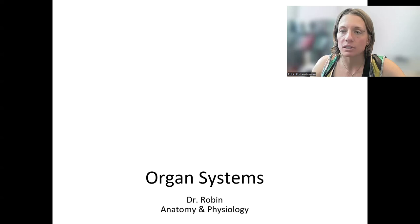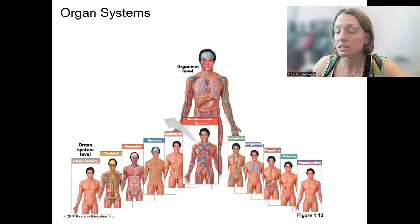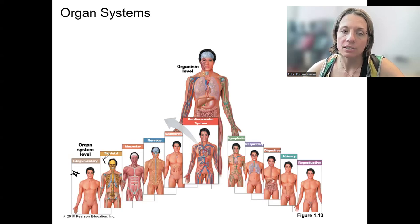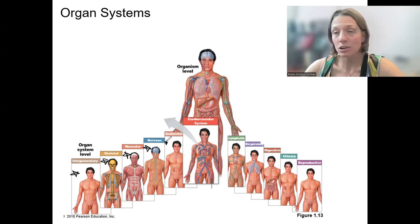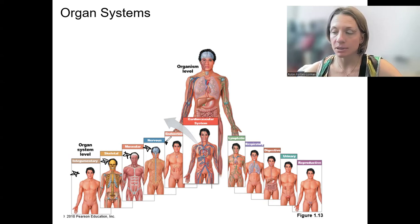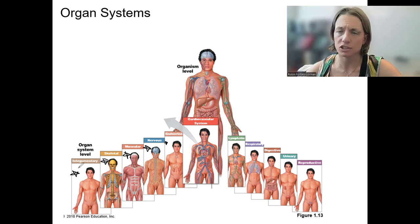We will do several of the organ systems in detail this semester and other ones in second semester. The ones for this semester are the integumentary, skeletal, muscular, and nervous, and a little bit of endocrine — just because you can't not talk about those control systems. We're going to cover some of them in more detail this semester, but I want you to have an overview of the basic function of each.